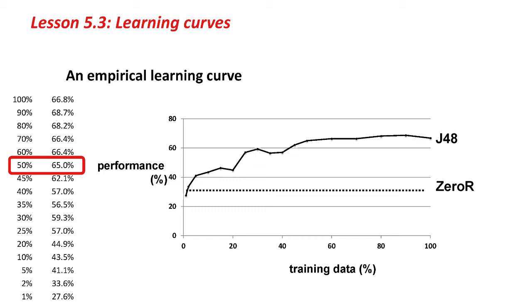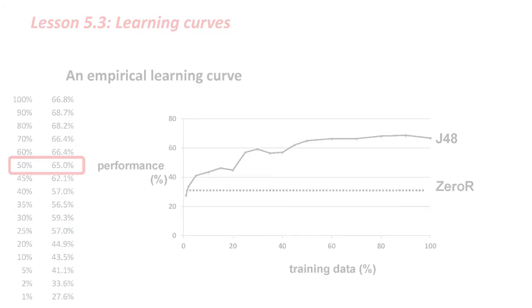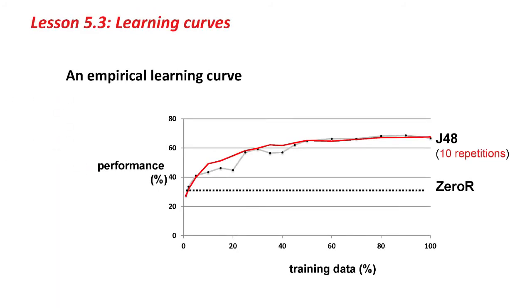I've shown the zero-R performance there for reference. The line's a bit jagged, and to get a smoother line, I'd want to do it several times with cross-validation. If I do 10 repetitions of J48, then I get this line here. I did this with the experimenter. Very easy to do. Then I did 1,000 repetitions. I get this red line here, a quite smooth kind of line.